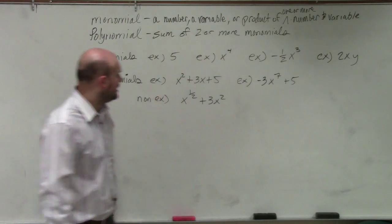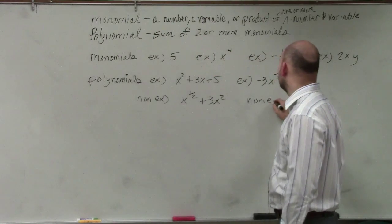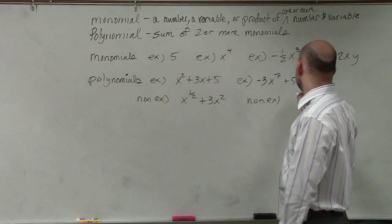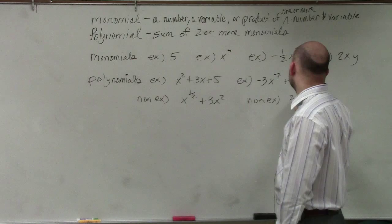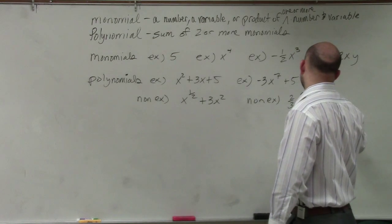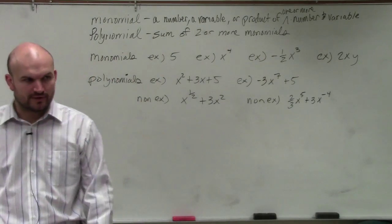Another non-example is the powers of your exponents cannot be negative. So therefore, you couldn't have 2/3 x to the fifth plus 3x to the negative fourth. You can't have negative powers.